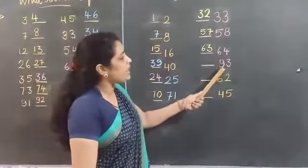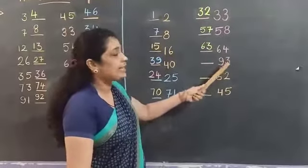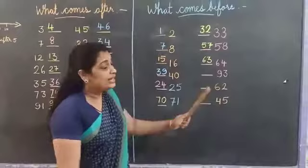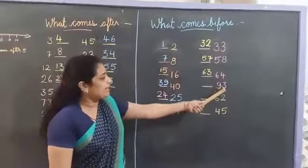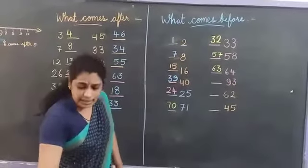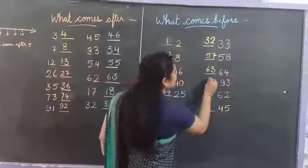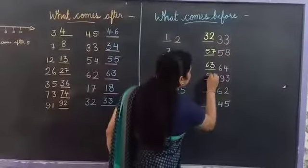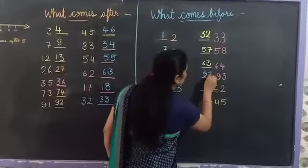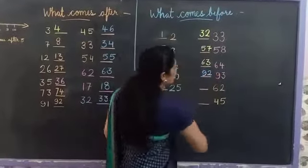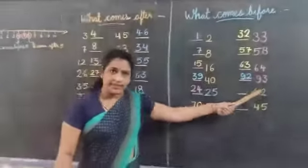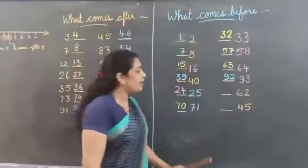And next number is 93. 93 ke pehle kya tha? 9, 2 — that is 92. 92 comes before 93.